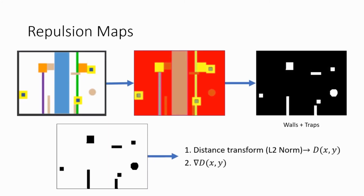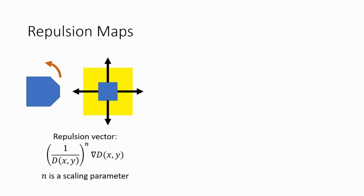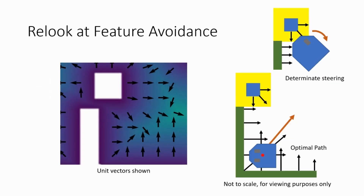The idea of repulsion maps is to generate position-based steering vectors that repel the robot from traps and walls. First, we mask out the pixels composing walls and traps. Then we invert the image and process it by doing a distance transform and taking the gradient of the output. The color bar measures the output of the distance transformation, dxy, which is the shortest distance to a wall or trap. The direction of the arrows gives the direction of the gradient of dxy, indicating the direction of greatest increase of dxy. As a robot should be repelled away from features, we set the repulsion vector parallel to the gradient of dxy, and scale this vector to be negatively related to dxy so it is large only when the robot is near a feature. We visualize this avoidance vector using an HSV image where hue is proportional to the angle and value is proportional to the magnitude. Considering the repulsion vectors, the two problematic cases are neatly resolved, and we no longer have to consider separate cases for wall and trap avoidance.